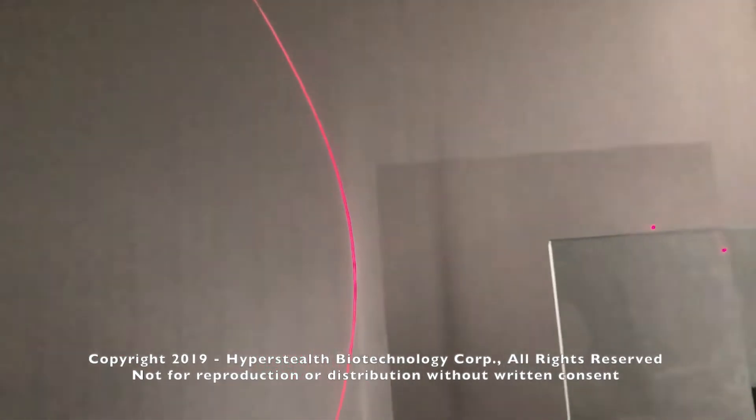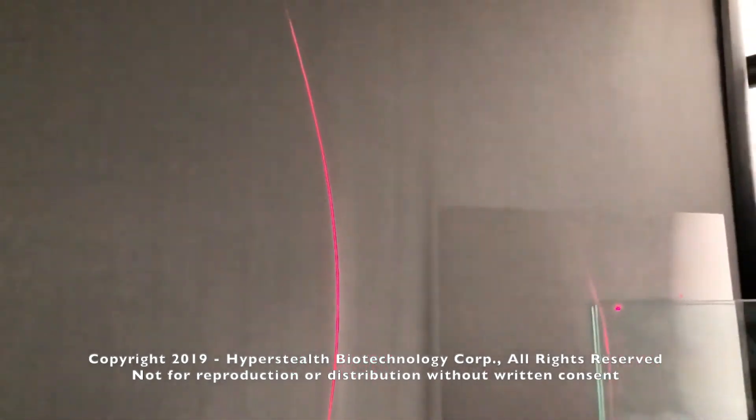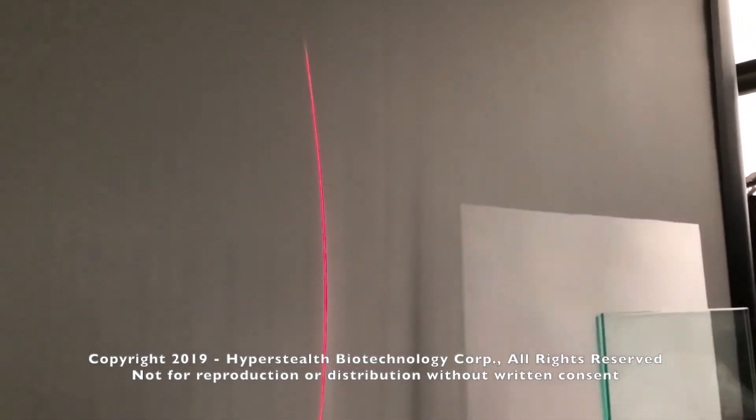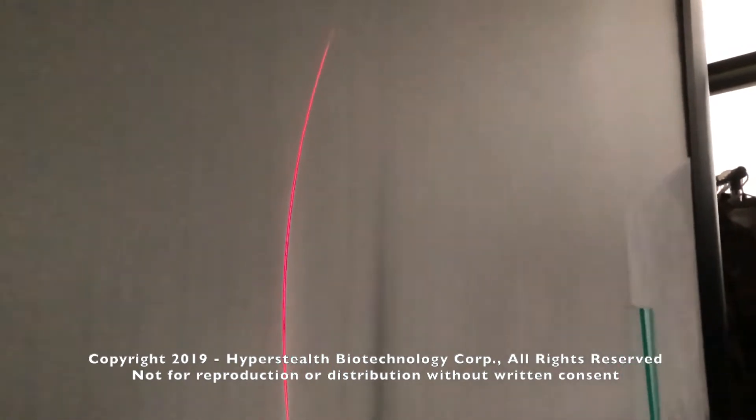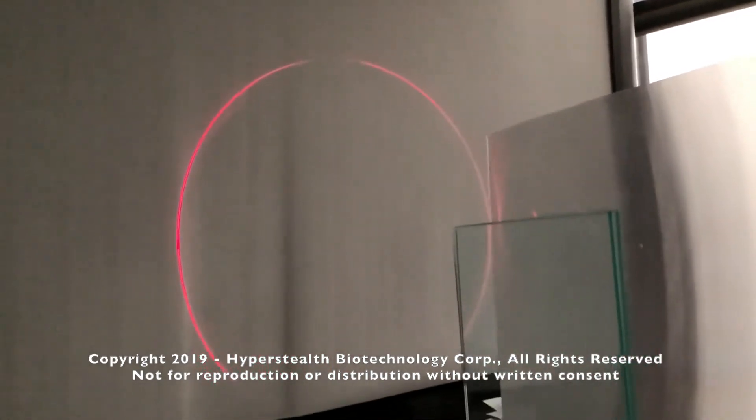The laser is both refracting through the lens and reflecting off the lens almost in equal parts. Remember, this is a single-sided lens—there is no lens on the smooth backside.